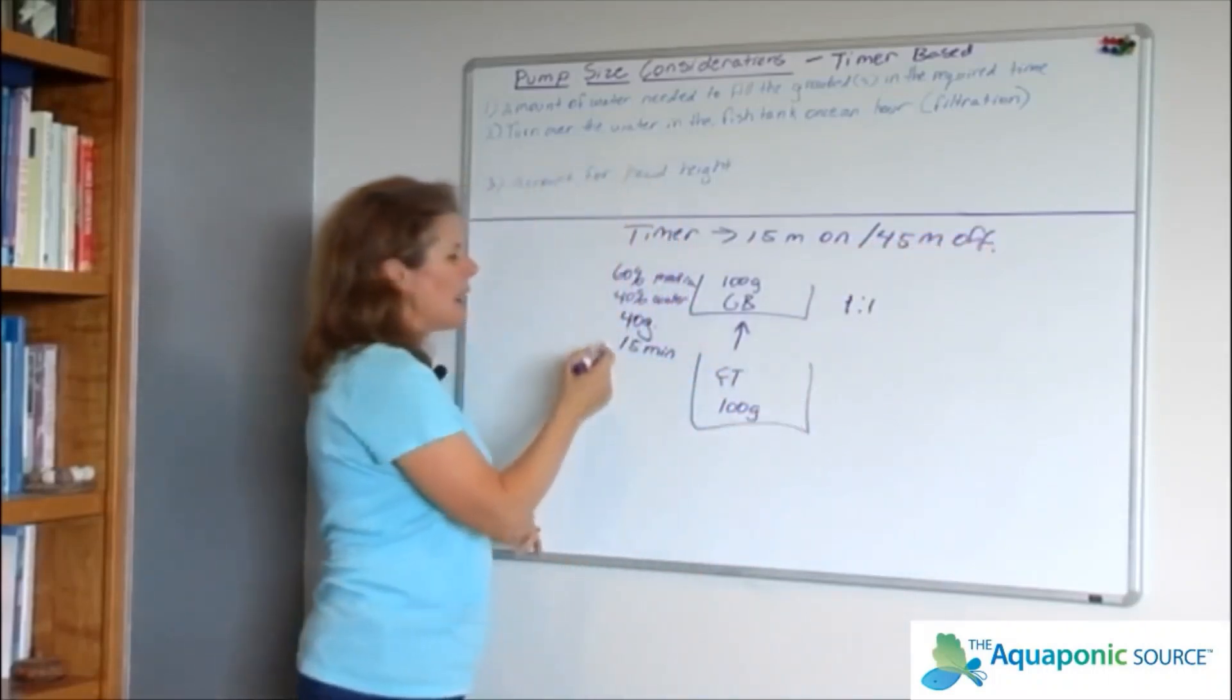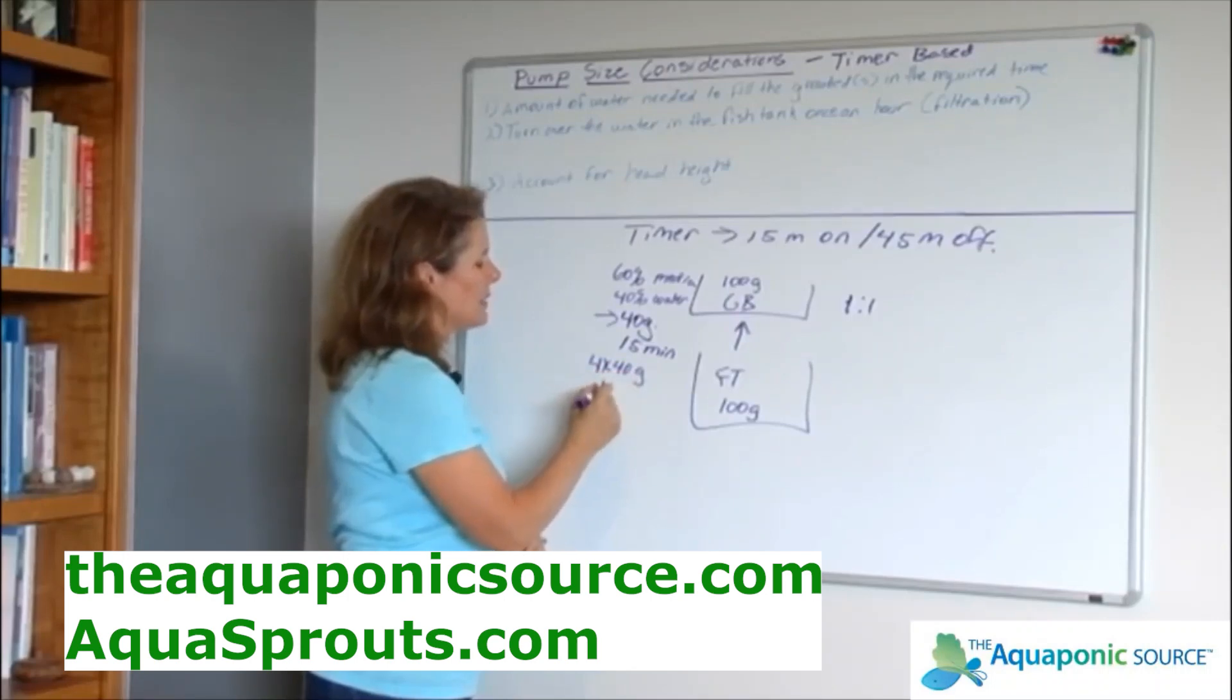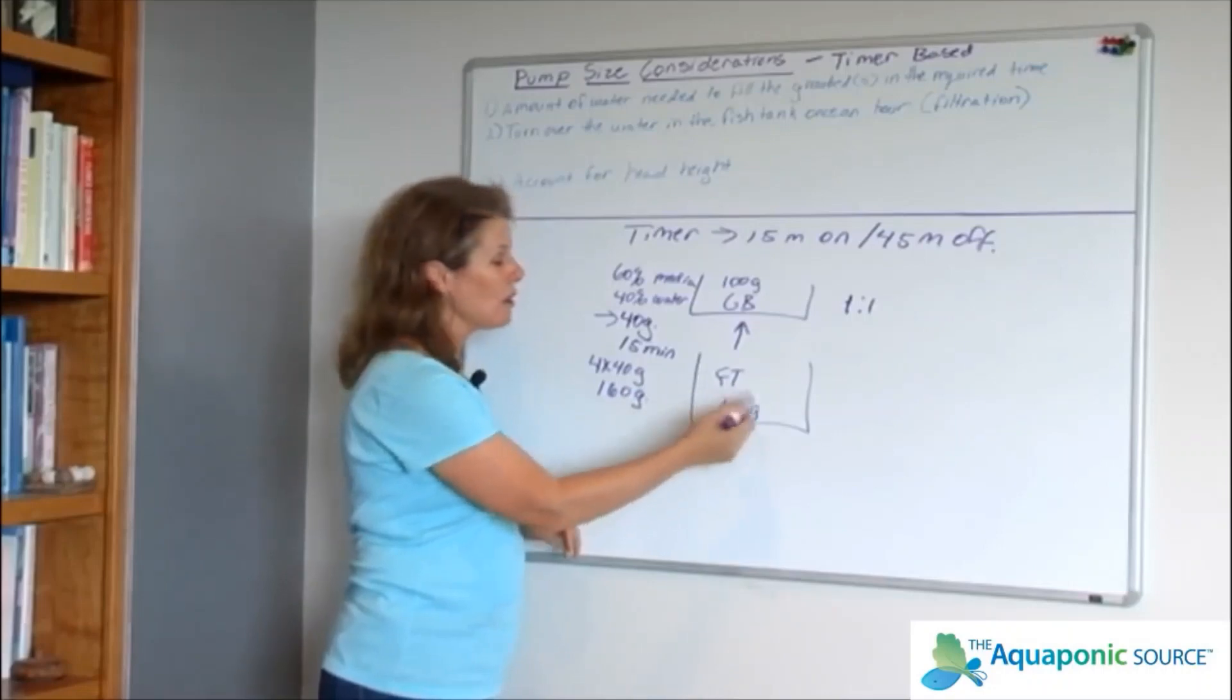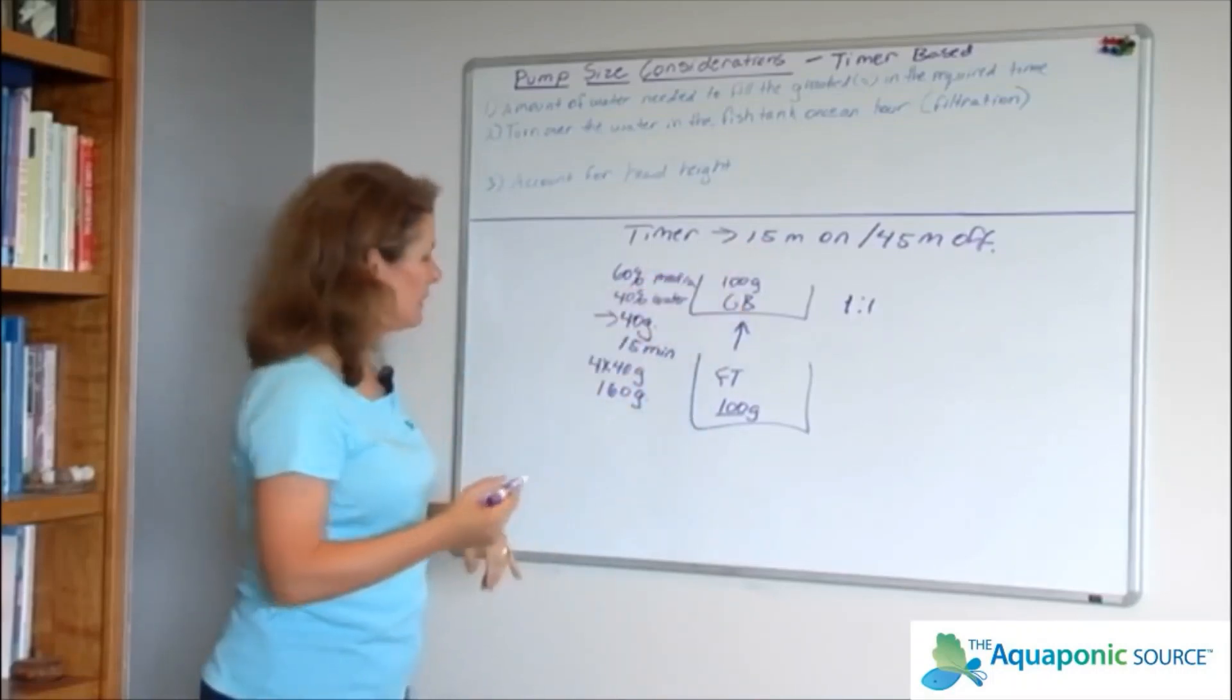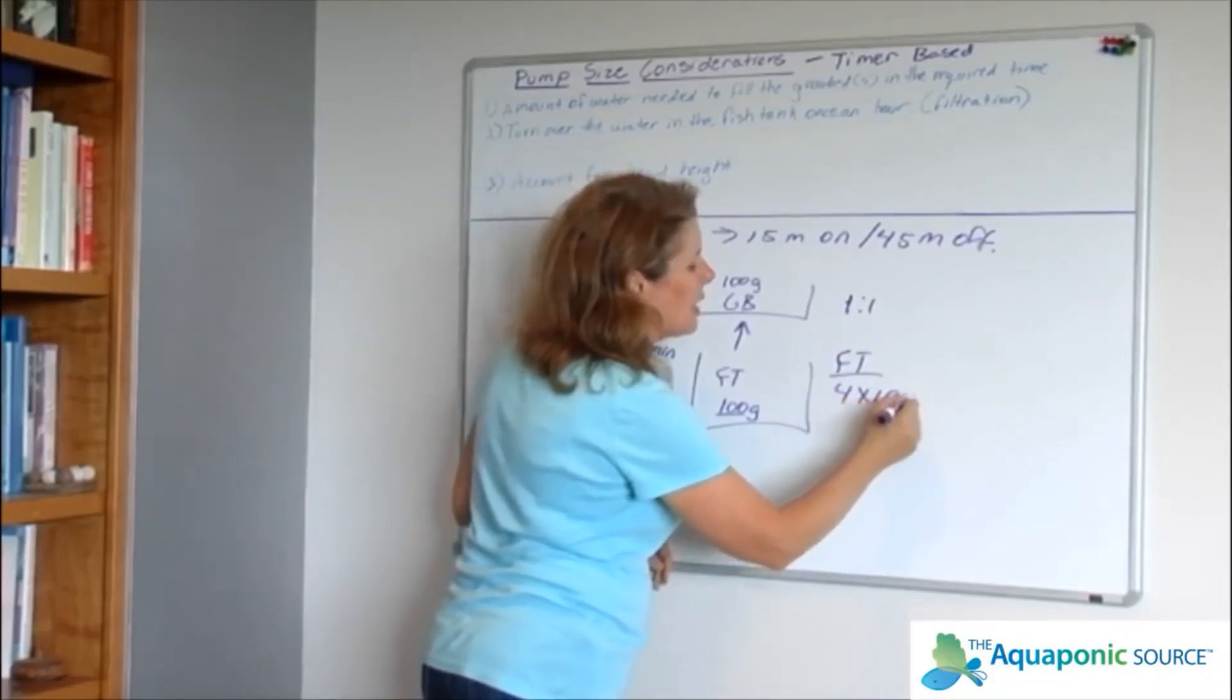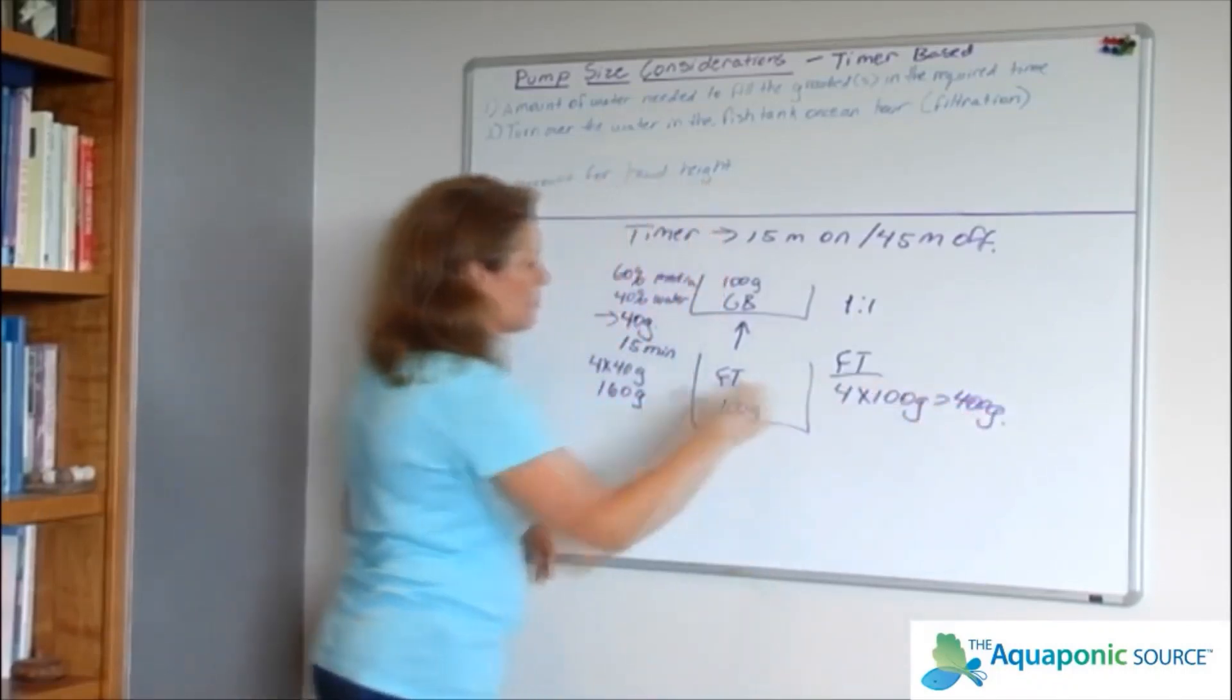Now let's look at number two. I need to turn over all the water in this fish tank, or 100 gallons, in an hour. Again, because we're only 15 minutes on for the fish tank, I need to move four times 100 gallons or 400 gallons. This is a much higher threshold than this one, so I need at least a 400 gallon per hour pump.